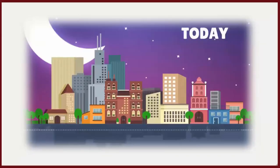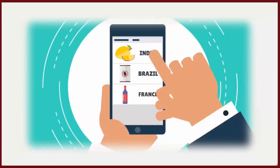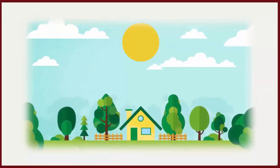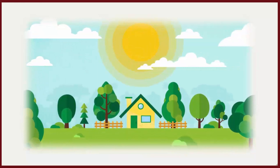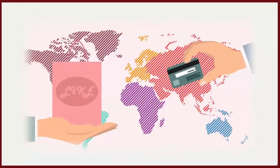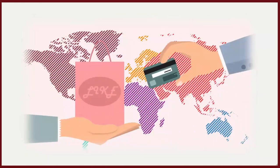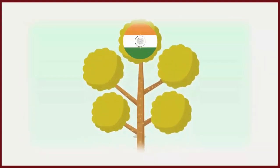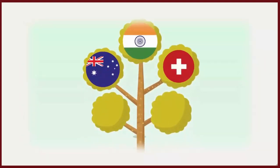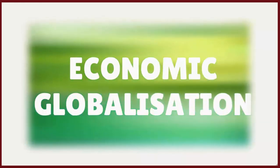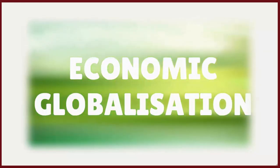Today we can get Alphonso from India, coffee from Brazil, and wine from France sitting at our homes because of something called international trade. Traders are extending their areas of business by seeing the world as a global market. Countries are coming together as one big global economy. This is called economic globalization.